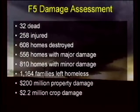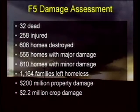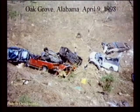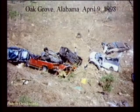It was rated as an F5 tornado. It actually ended up killing 32 people. There were 258 injured, 608 homes destroyed, about $200 million in property damage, and about $2.2 million in crop damage from that storm. Here are some pictures from Oak Grove, Alabama the next day from that tornado — obviously looks like what you would expect F5 damage to look like. Here was a number of cars that were parked along a highway that were thrown down into a ditch, obviously rolled along there and destroyed.